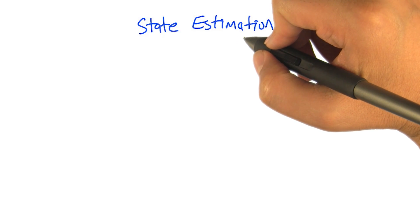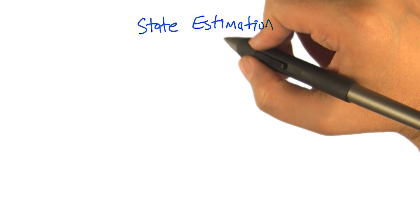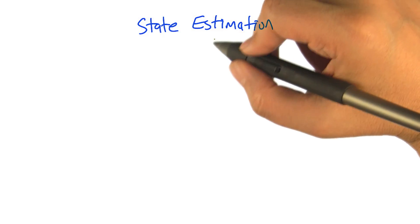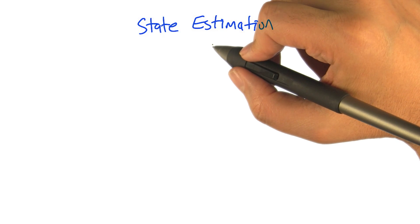So the next problem that we need to worry about is the problem of state estimation. And as we were just talking about a couple of moments ago, we can make a POMDP into a kind of MDP by expanding out the state space.